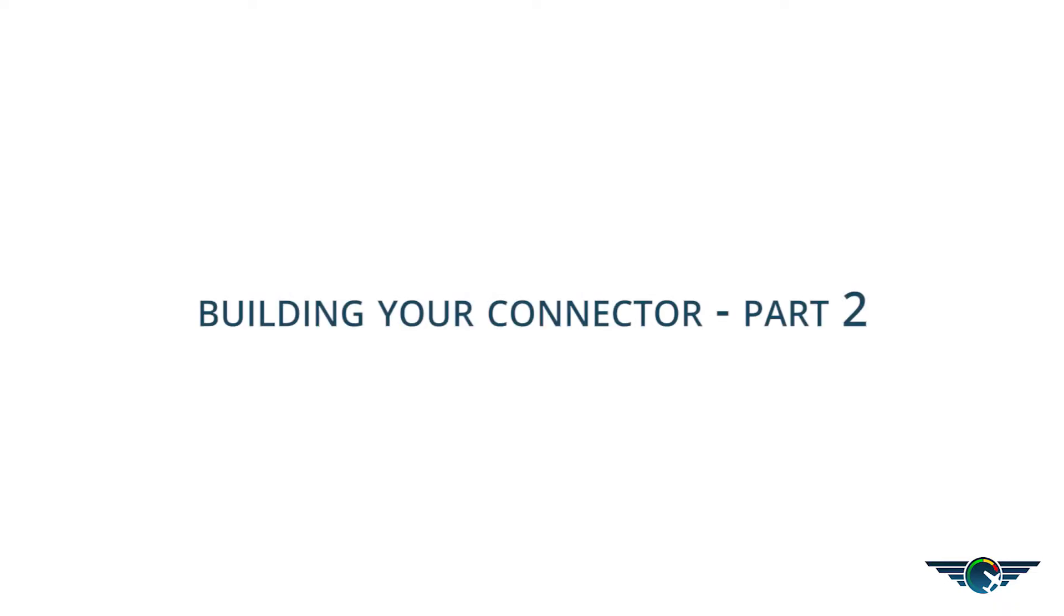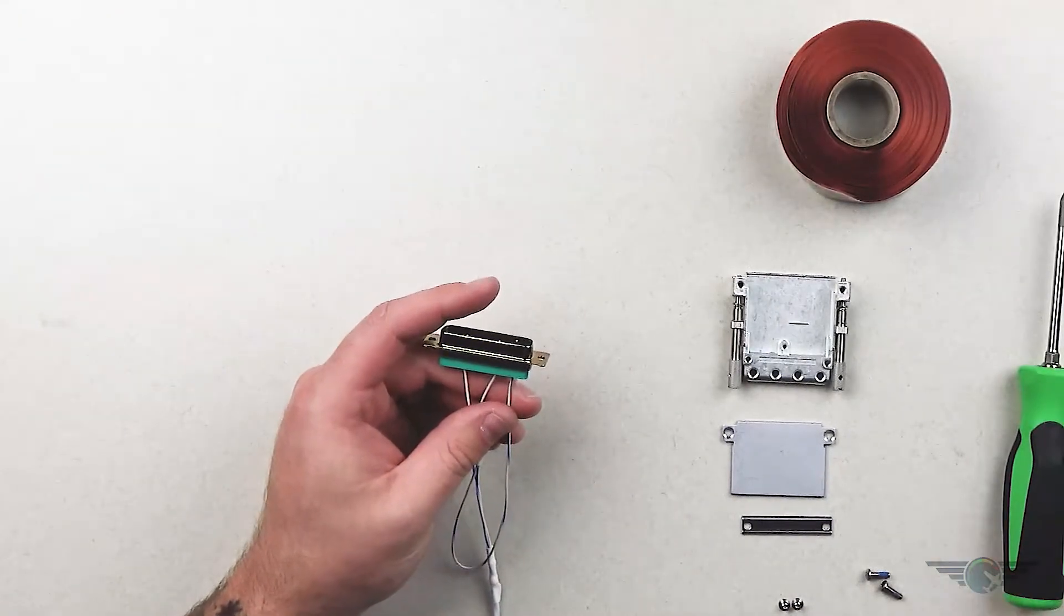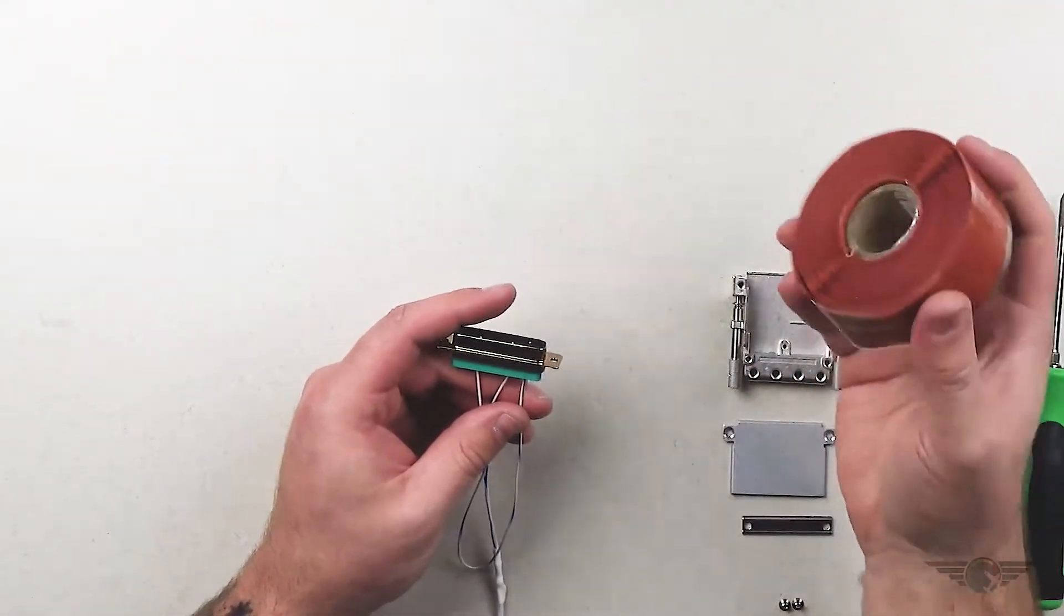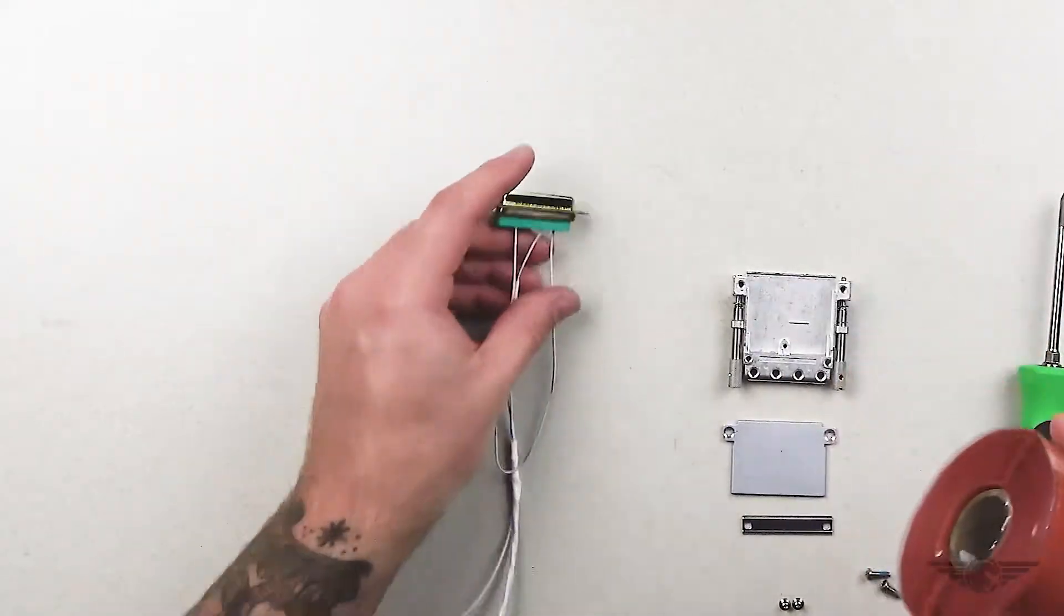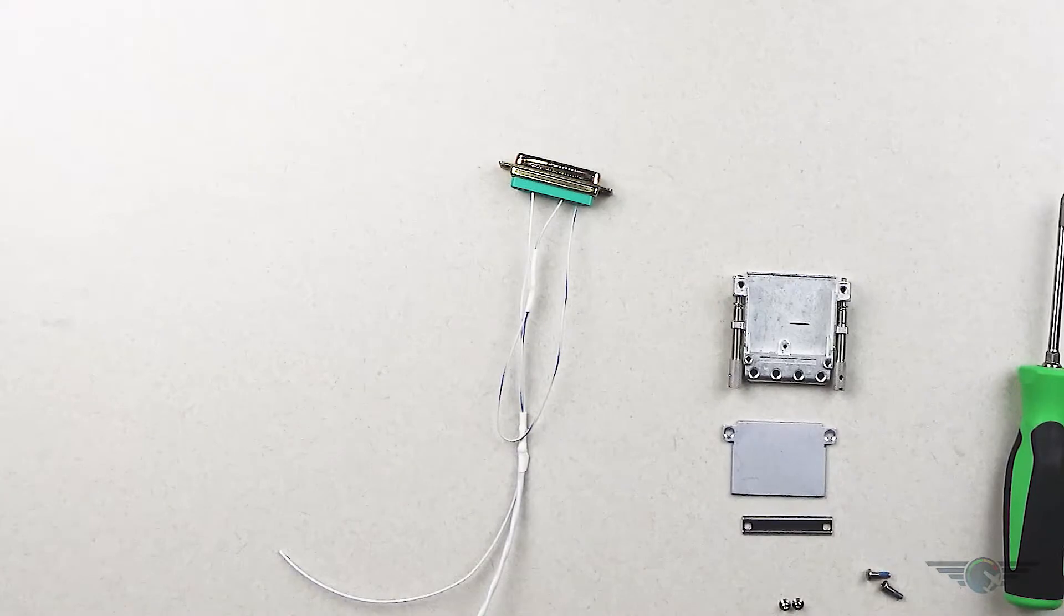Okay, so we've got our pins inserted in our connector, right? Now we need to build the rest of the connector. You can see here I've got a screwdriver to use the screws, and then I've got some fusion tape or F4 tape, whatever you want to call it, and we're going to use that to go over the wires to prevent chafing.